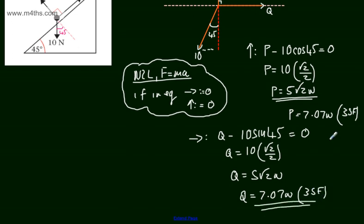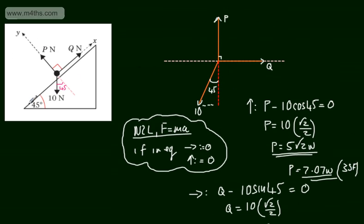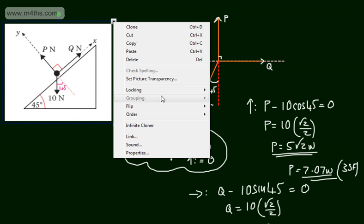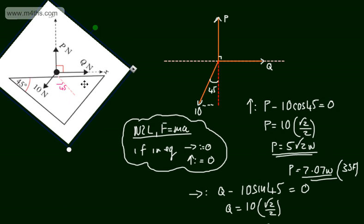All we've done is resolved horizontally and vertically, putting this as a forces diagram on the plane with the plane horizontal. I've just rotated the diagram and placed the forces accordingly. You don't have to do it that way — you can look at it as a plane and resolve. So there are two examples of looking at statics in equilibrium and how to find missing forces and angles.